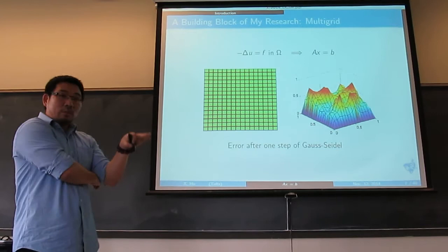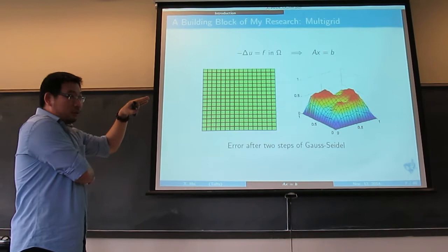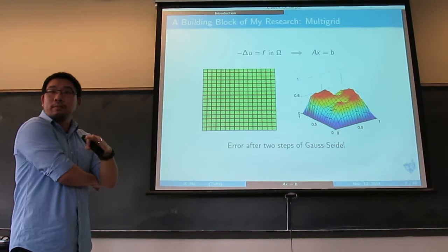The magnitude damps — beginning is almost 1, it damps to like 0.5 or 0.7. The error profile also becomes smoother than before. I do one more Gauss-Seidel step: the magnitude goes down a little bit, not too much, but the profile becomes smoother.